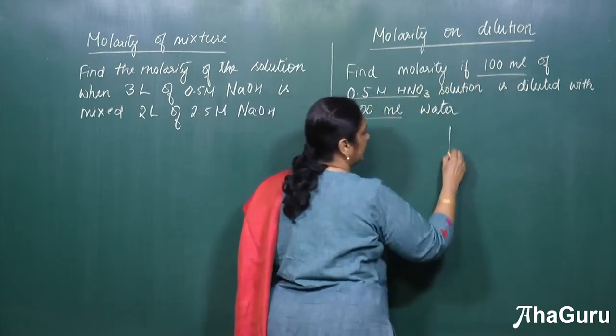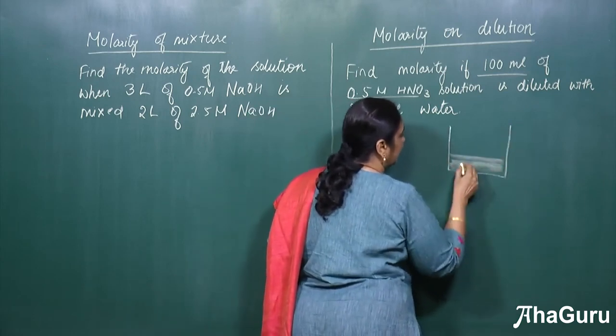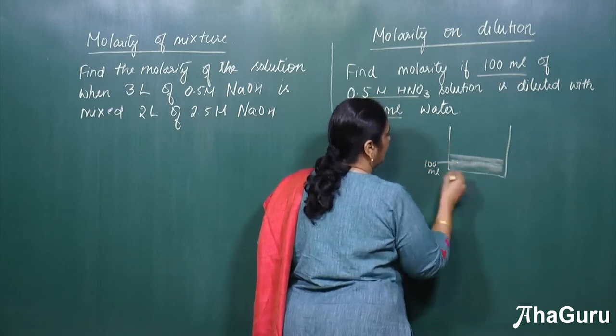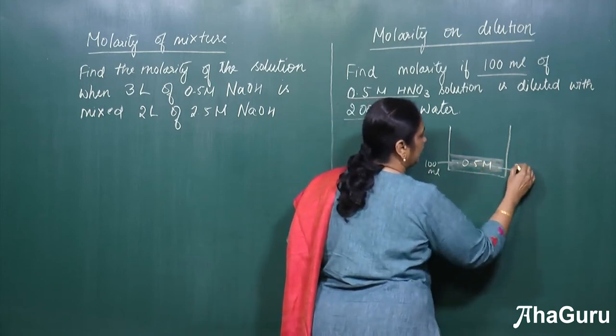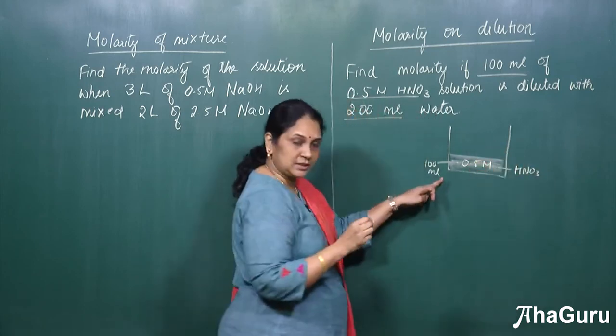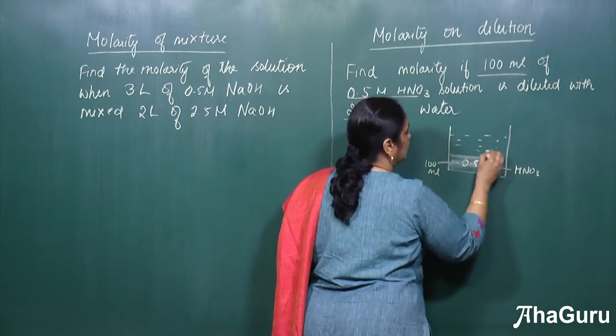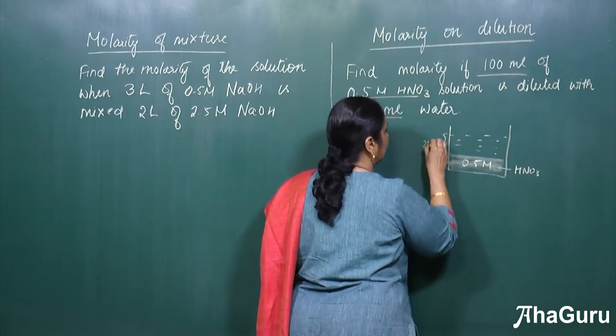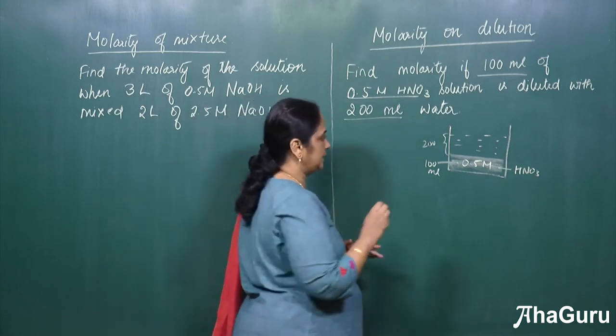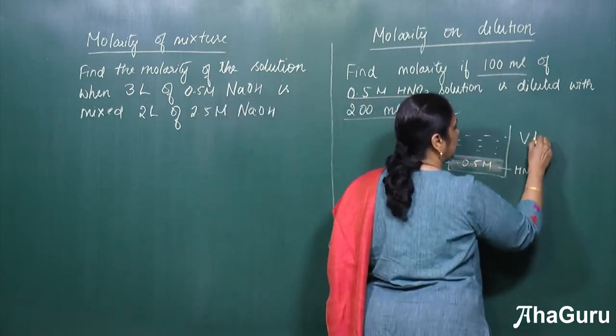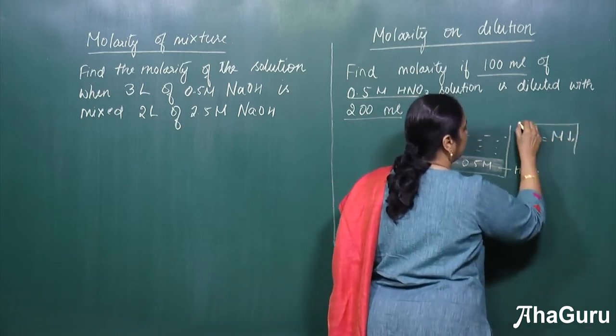So let us take like this. This part is 100 ml of 0.5 M nitric acid. Now to this solution I am going to add 200 ml of water. So this volume is 200 ml. So now what has happened here? The volume has increased. Now please remember, when volume increases, the molarity will decrease.